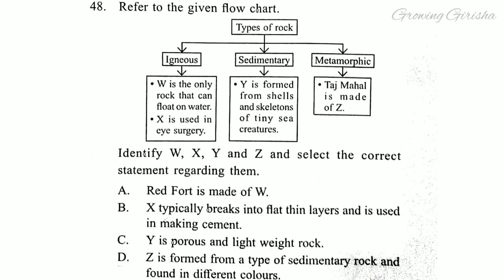Question 48. Refer to the given flow chart. Identify W, X, Y, and Z and select the correct statement regarding them. Answer is option D: Z is formed from a type of sedimentary rock and is found in different colors.